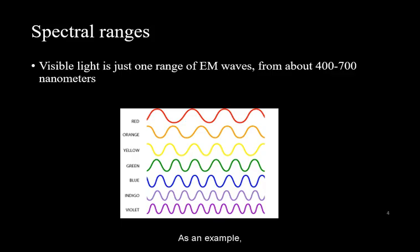As an example, for visible light, the red range of the spectrum is long wavelength and low frequency, while colors such as blue, indigo, or violet are short wavelength and high frequency.